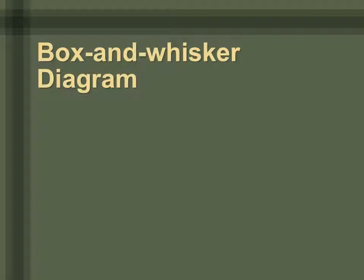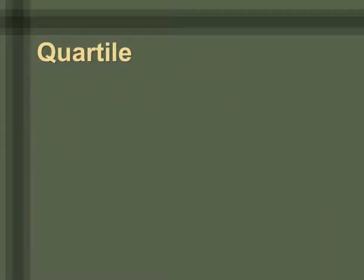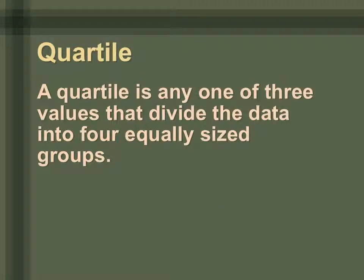The box and whisker diagram is a line segment. That line is going to show us some very important numbers about our data — the highest number, the lowest number, the median of the data, and the upper and lower quartiles. A quartile is any one of the three values that divide the data into four equally sized groups.